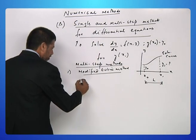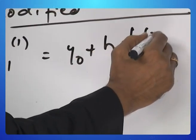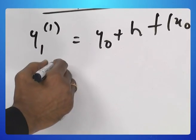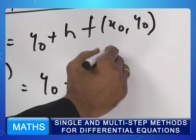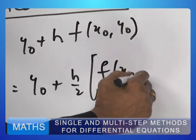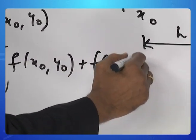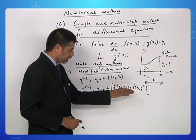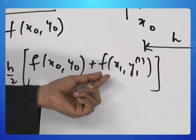Let us see what is modified Euler's method. According to this y1 first iteration is y naught plus h f of x naught y naught and then y1 second approximation is y naught plus h by 2 into f of x naught y naught plus f of x1 comma y1 first approximation. It is basically the average of the slopes. You find f of x naught y naught and add f of x1 comma y1 first approximation which comes from the previous step.